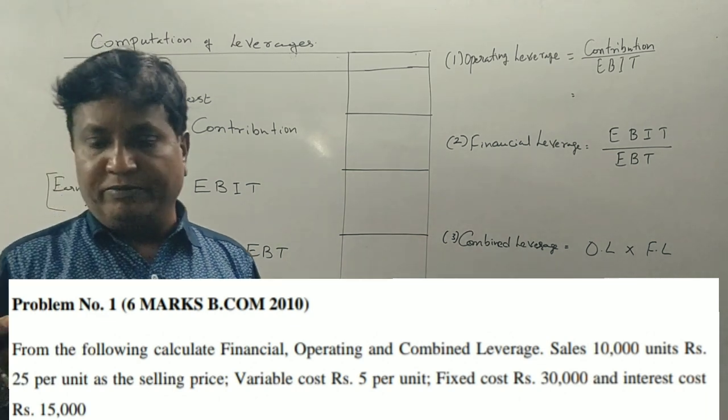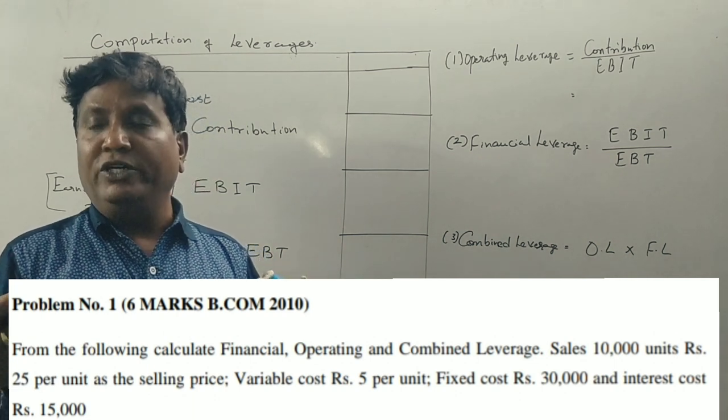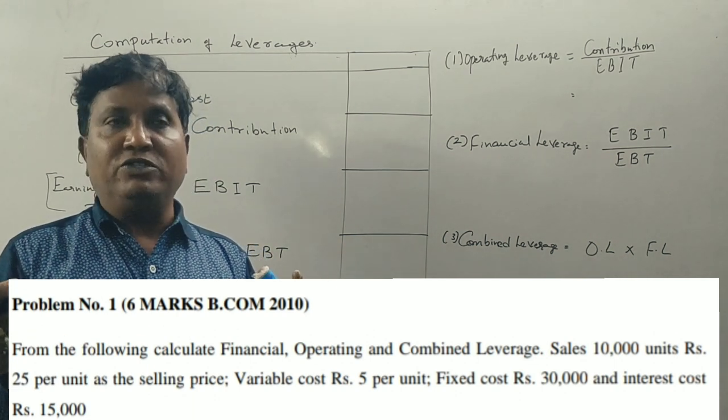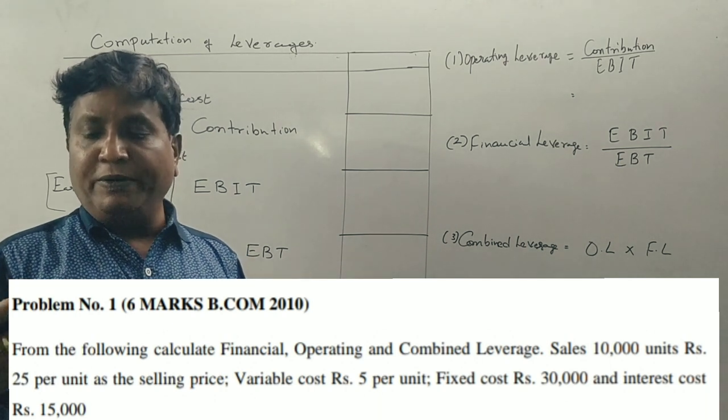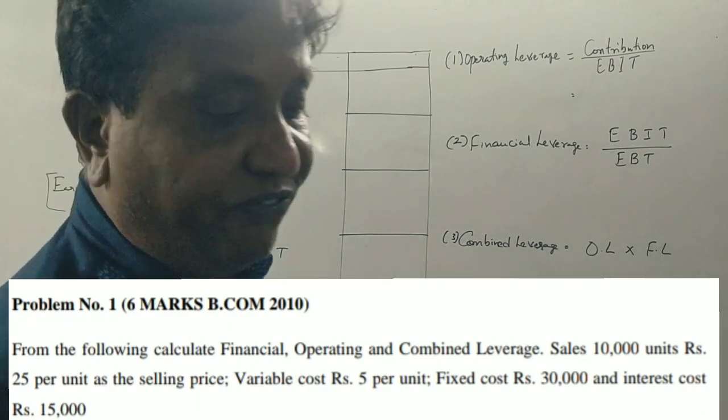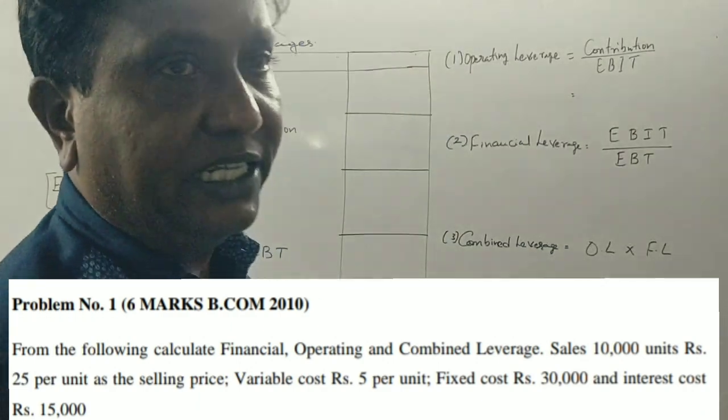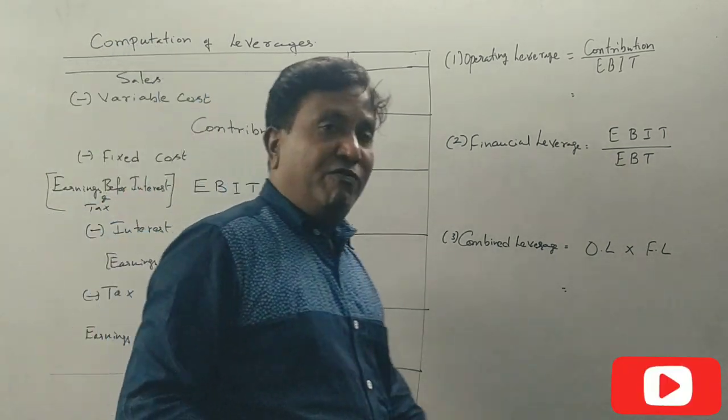From the following, calculate financial, operating, and combined leverage. Sales: ten thousand units at twenty-five rupees per unit selling price, variable cost five rupees per unit, fixed cost thirty thousand rupees, interest cost fifteen thousand rupees. Now calculate leverages. First, the format.